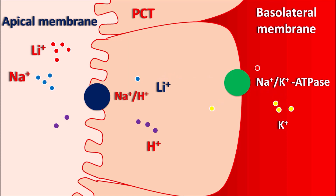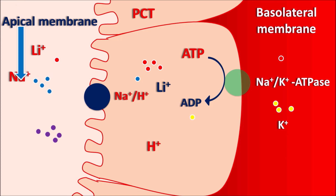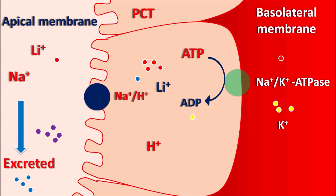Lithium can be exchanged for potassium by the Na/K ATPase pump to enter systemic circulation, but this requires energy in the form of ATP converted to ADP. When lithium levels are excessively increased, the Na/K ATPase pump cannot transport more lithium into systemic circulation, so lithium accumulates within the renal tubules. Because transport at the basolateral membrane is energy-dependent, lithium accumulates there. As a result, sodium is not reabsorbed and is excreted in urine, producing hyponatremia — decreased sodium levels in the blood.